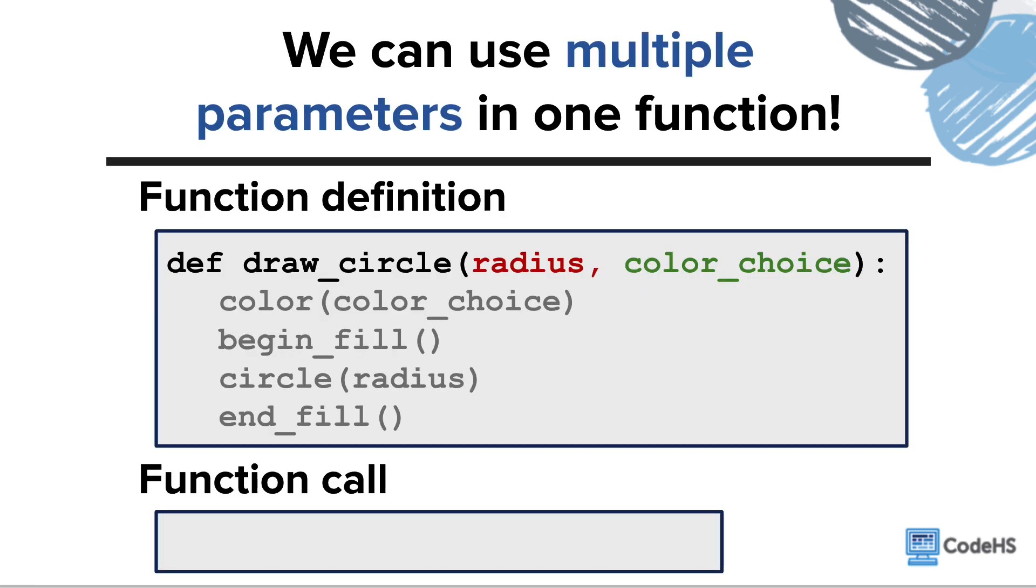One more thing to know about parameters is that we can have as many as we want in our functions. Here, we have a parameter that will control the radius of the circle and another that can be used to control the color of the circle. So how would we call this function now?